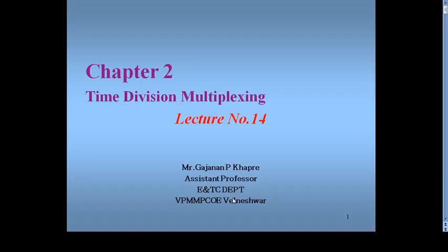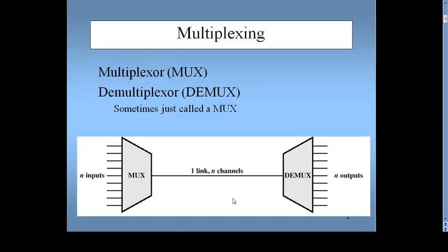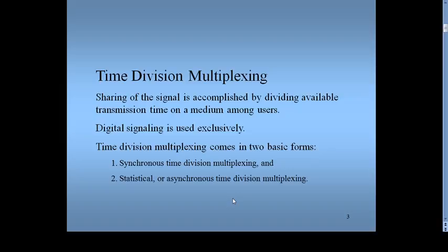Let us begin with TDM. Multiplexing is a technique in which many inputs are combined and sent over a single line — many-to-one. At the receiver side, we demultiplex, which is one-to-many mapping. Many data streams can be sent simultaneously over a single channel line. There are two types of multiplexing: frequency division multiplexing and time division multiplexing.